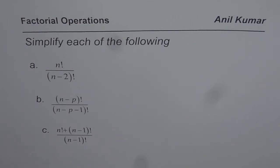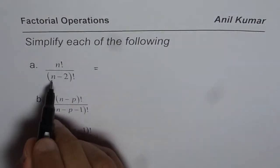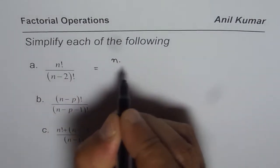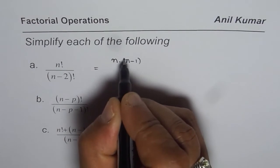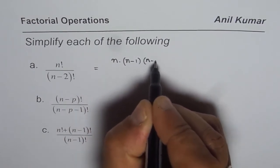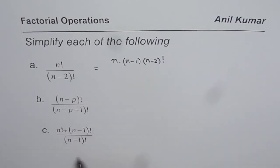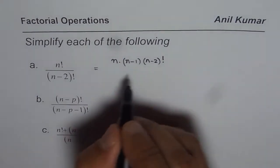Let us see how to simplify them. The first one, n factorial over n minus 2 factorial. We can write the numerator as n times n minus 1 times n minus 2 times n minus 3 and so on, or n minus 2 factorial. That is the key.